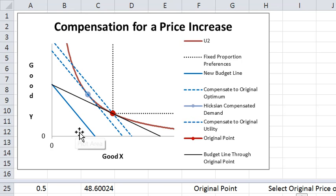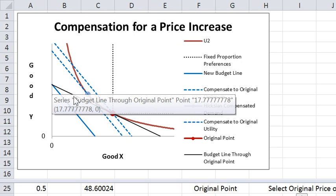This is the new budget line without compensation. The budget line swings in along the good X axis. Since the price of good Y and income isn't changing, that point stays fixed.